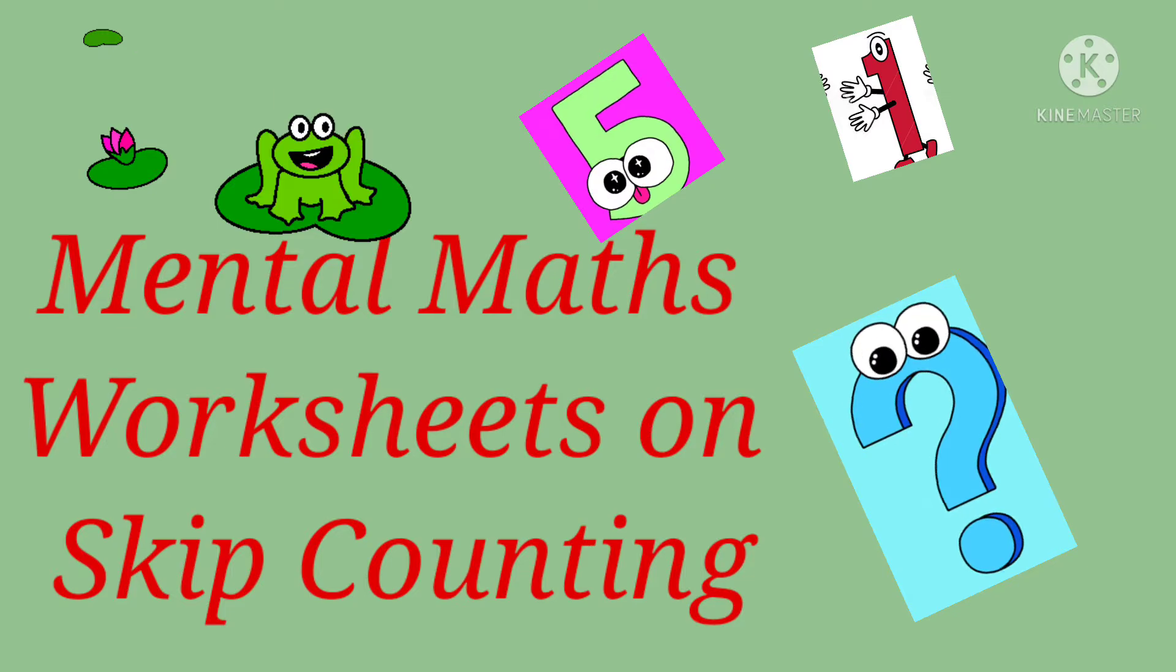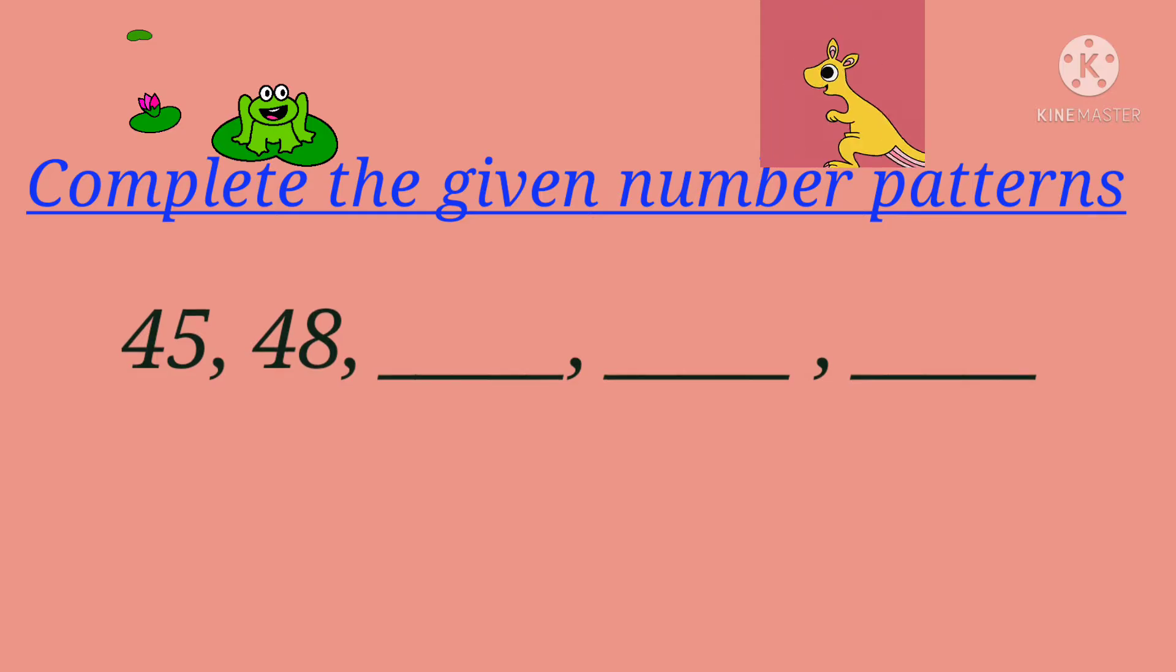Our first worksheet will be based on completing the given number pattern. Here we have 45, 48, then we have to fill in the next three numbers. So here first they have to find out the relation between 45 and 48. How many numbers are being skipped between those two numbers? 45, then we will open our fingers: 46, 47, 48. So we have opened here three fingers. This means every time we have to add 3 to the number so that we can find out the next number.